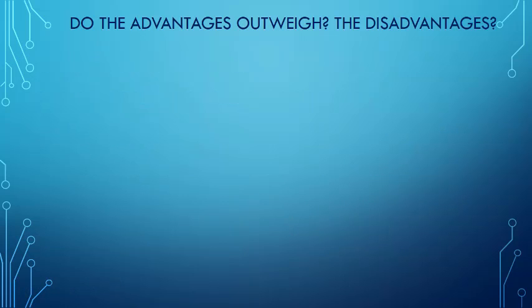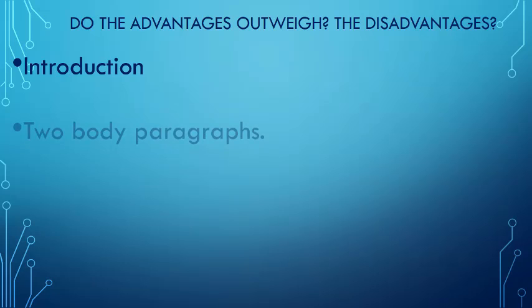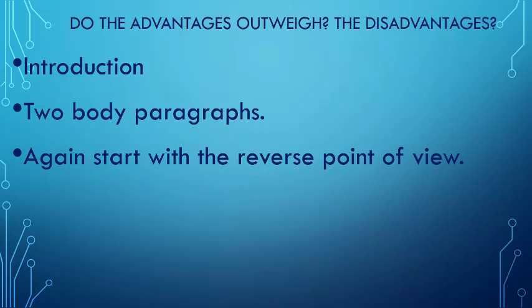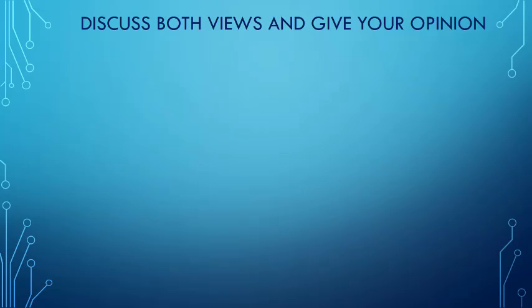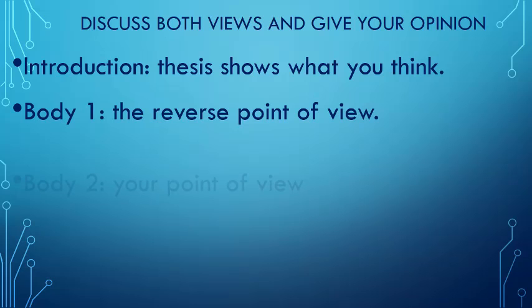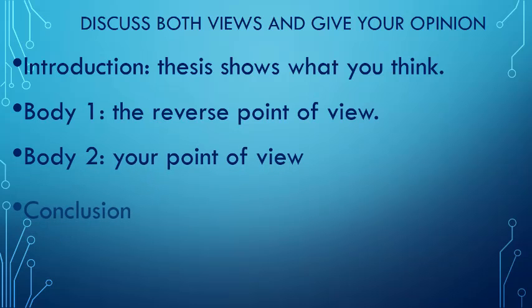The third type is: do the advantages outweigh the disadvantages? You start with an introduction, then write two body paragraphs about the advantages and disadvantages, starting with the reverse point of view. You refute the other point of view in the second paragraph and end with the conclusion. For 'discuss both views and give your opinion,' you start with an introduction with a thesis that shows what you think — because it says give your opinion. Body paragraph one: the reverse point of view. Body paragraph two: your point of view. Then the conclusion.